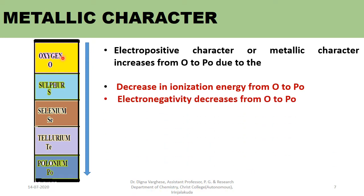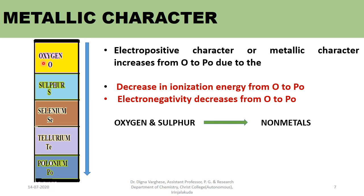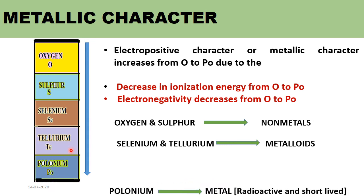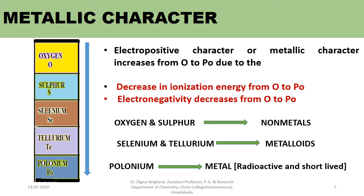Another reason is electronegativity, which decreases from oxygen (3.5) to polonium (2.0). These two factors — ionization energy and electronegativity — make polonium the most metallic. Oxygen and sulfur act as nonmetals; selenium and tellurium act as metalloids, showing properties between metals and nonmetals; and polonium is a metal, though it is radioactive and short-lived.